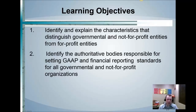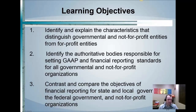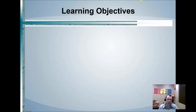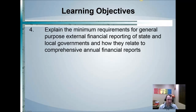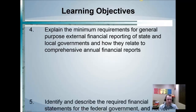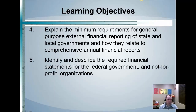We're going to talk about the authoritative bodies for governmental and nonprofit accounting, and what constitutes GAAP — generally accepted accounting principles — for each of these. We'll also talk about financial reporting for different state and local government entities, federal government entities, what's called the CAFR or comprehensive annual financial report, and the different financial statements for federal and nonprofit organizations.